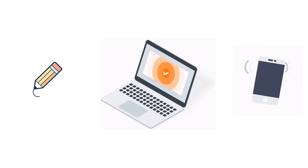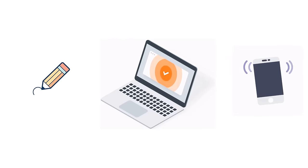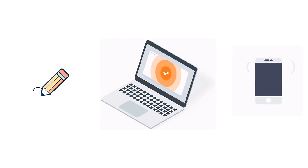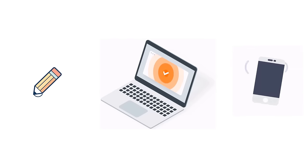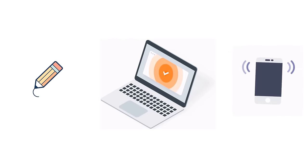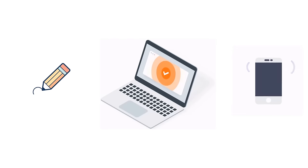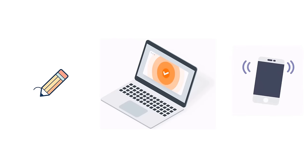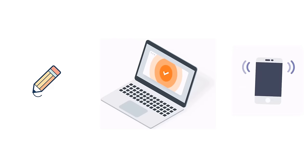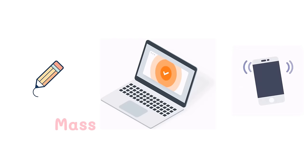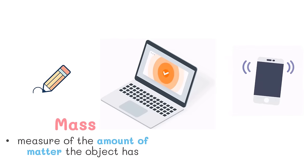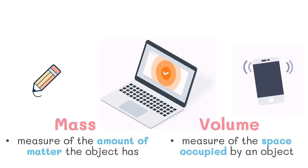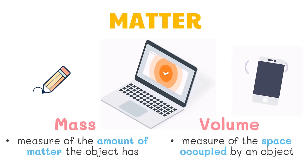When you compare the pencil, laptop, and smartphone, surely you will say that the laptop is the heaviest of the three objects, while the pencil seems to be the lightest. The smartphone may not be as heavy as the laptop, but it is not as light as the pencil. This means that objects around us may be light or heavy — they have mass. Mass is the measure of the amount of matter an object has. The objects in the picture also show that they occupy space. Volume is the measure of the space occupied by an object. So what do we call these objects that have mass and volume? We call them matter.